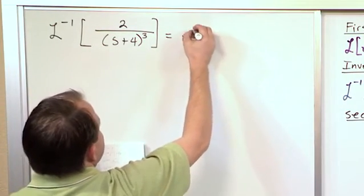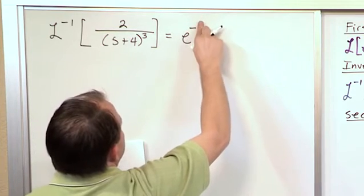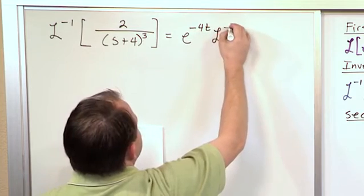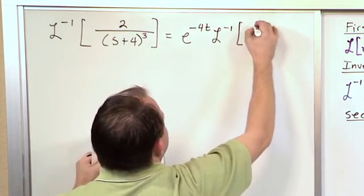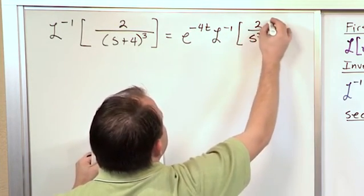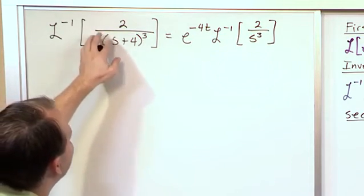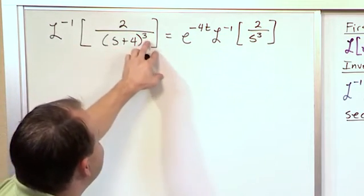So the way you would write that is to say that's equal to e to the negative 4t times the inverse Laplace transform. What do we have left over? It's going to be 2 over s cubed. That's because of the shift. When I replace s with s minus 4, then all this goes away. It's just s cubed left.